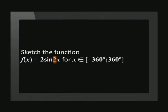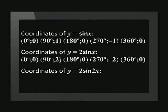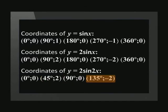Going back to the equation, k has a value of 2. The value of k changes the period, and because this value is 2, the graph will appear compressed. We find the new coordinates by dividing each x-coordinate by 2, giving us: (0, 0), (45, 2), (90, 0), (135, -2), and (180, 0).